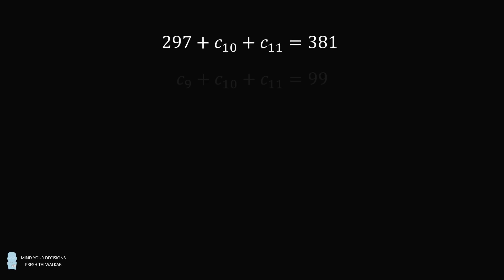Furthermore, we know that C9 + C10 + C11 = 99. Subtracting the second equation from the first cancels the variables C10 and C11. This gives the following equation: 297 - C9 = 381 - 99. We simplify this equation and solve for C9. We get C9 = 15.